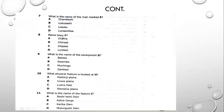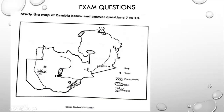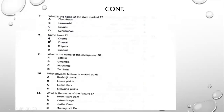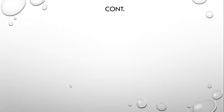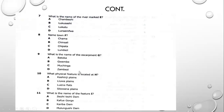Question 8 asks to name town F. Town F is Chama — so the best possible answer on question 8 is A. Question 9 asks: what is the name of escarpment G? In our previous lesson on Zambia's relief levels, I mentioned the Zambezi Escarpment. The best possible answer here is the Zambezi Escarpment.